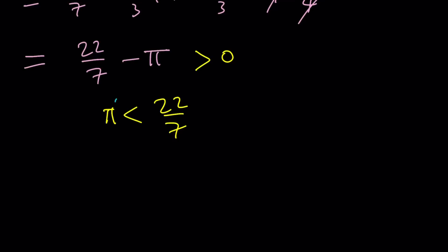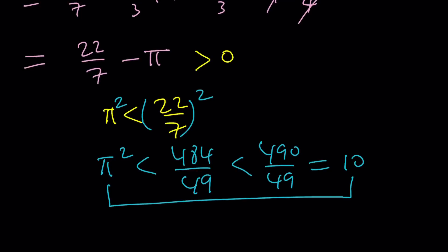We're going to square both sides and yay. It's going to give us pi squared is less than 484 divided by 49, which is less than 490 divided by 49, which is 10. Awesome. Pi squared is less than 10, and 10 is the winner one more time.